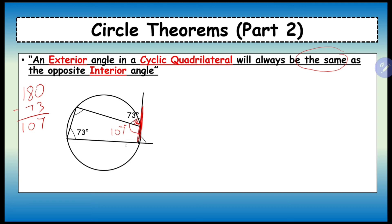You don't have to go through all of this working out if you follow the rule. If this angle is 88, the opposite angle should add up with 88 to make 180 degrees. Since these two add up to make 180 and these two angles on the straight line also add up to 180, technically this exterior angle and this interior angle are going to be exactly the same — which they are.